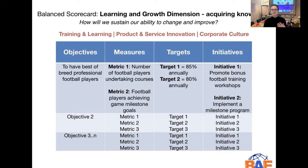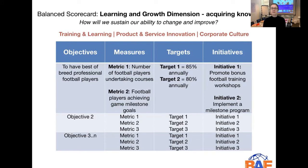Then the targets that we set — we know what we'll measure, but what are we actually aiming for? For the first metric, we're saying we would like 85% of our football players to do the courses that we send them on annually. For target two, we want at least 80% of our football players to achieve the game milestones that we set. So what do we need to do to make this happen? That's where initiatives come in. The first initiative would be to promote the bonus football training workshops to the team — to try and get to that target of 85% doing the training.